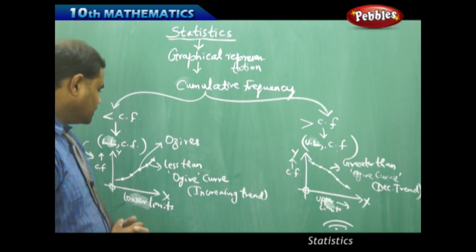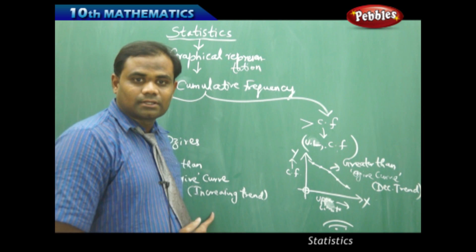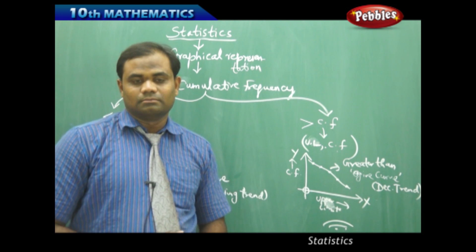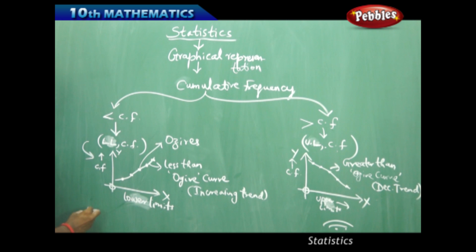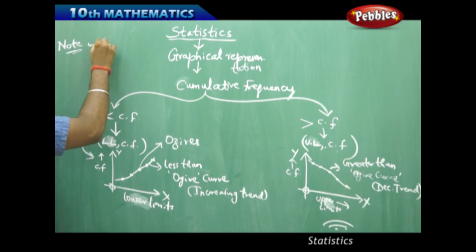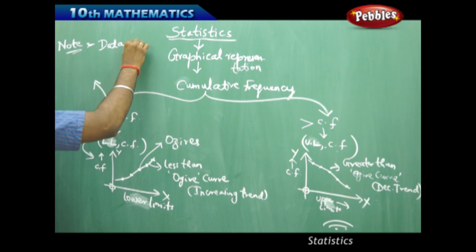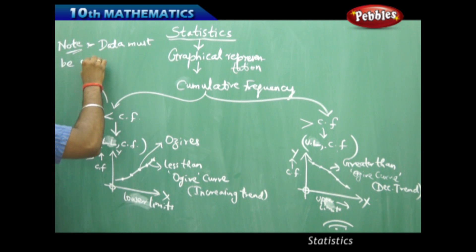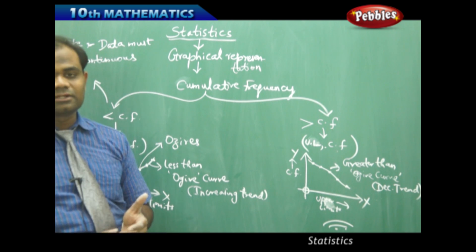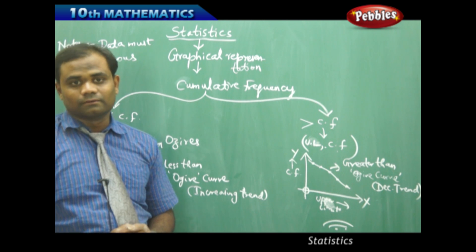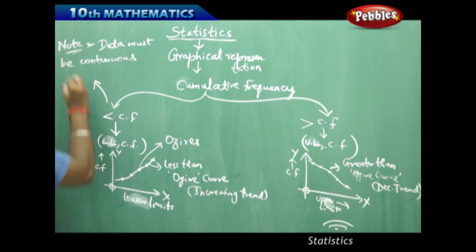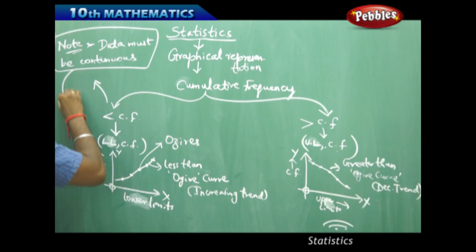We get cumulative frequency graphs that are either increasing or decreasing. One important note: the curve is continuous, therefore the data must be continuous. If there is a break in the data or no continuity in the class intervals, drawing an ogive curve may not be possible. This curve being continuous demands that the data also be continuous.